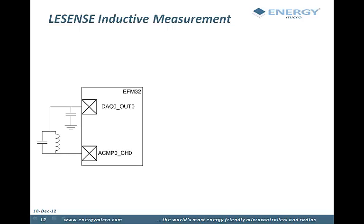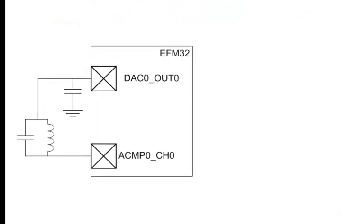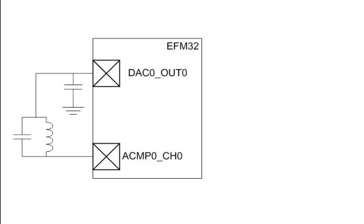In this example, sensing the proximity of metal is considered. The sensor consists of an inductor and a capacitor in parallel, also called a tank circuit.